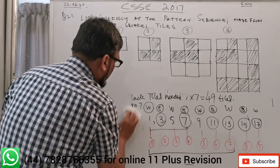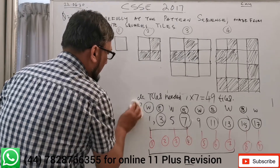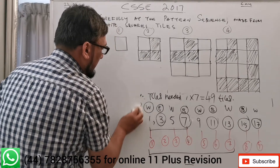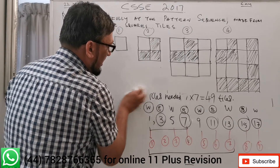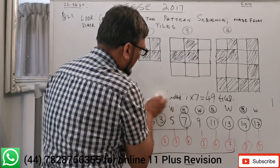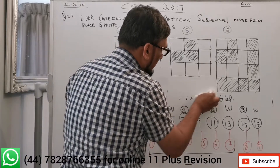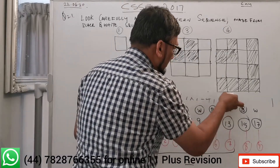So for part C, we need to work out how the ninth pattern uses 36 black tiles, and then find another pattern that also uses exactly 36.